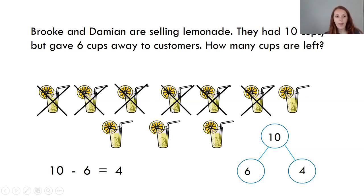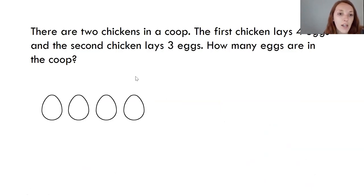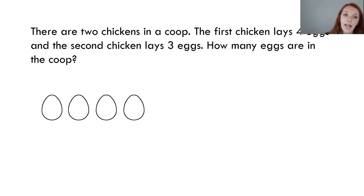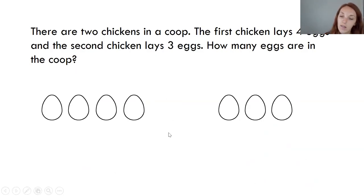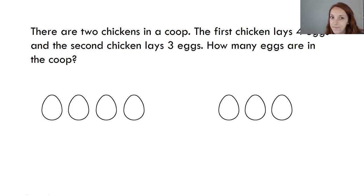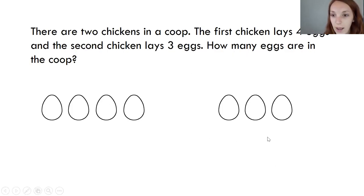So this was a takeaway problem. We have to be really careful that we're drawing what happens. Here's my next problem — I've already drawn the first step. Here are two chickens in a coop. The first chicken lays four eggs — here are my four eggs: one, two, three, four. And the second chicken lays three eggs. The first chicken laid four eggs, and the second chicken laid three eggs. My question says how many eggs are in the coop? This problem's really different — did anything get taken away? We had two different chickens that laid two different groups of eggs. It's asking us to put these eggs together.